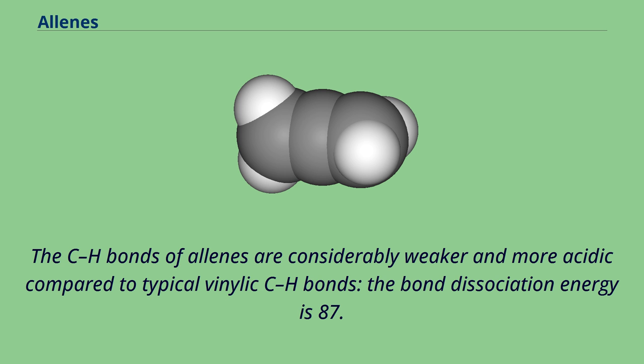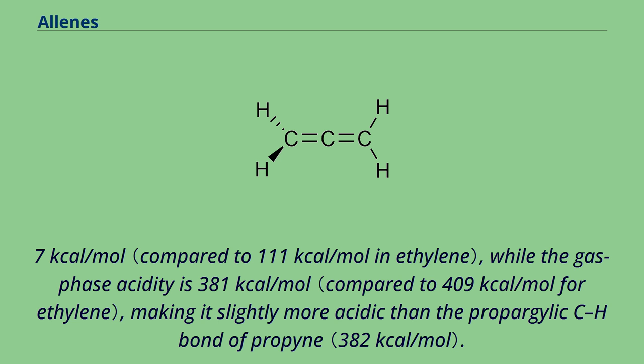The CH bonds of allenes are considerably weaker and more acidic compared to typical vinylic CH bonds. The bond dissociation energy is 87.7 kcal/mol, while the gas phase acidity is 381 kcal/mol, making it slightly more acidic than the propargylic CH bond of propyne.